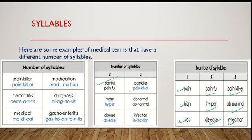Number of syllables: 'painkiller' — three syllables. 'abnormal' — three syllables. 'diagnosis' — four syllables. 'medication' — four syllables. 'painkiller' — three syllables. 'dermatitis' — four syllables. 'medical' — three syllables.